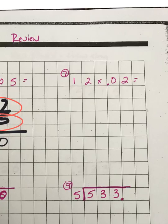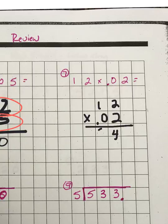For number seven, you're just taking 12 times 0.02 — multiply like normal. Count the number of digits to the right of the decimal up above: there are two. Then you have to have two numbers to the right of the decimal in your answer.